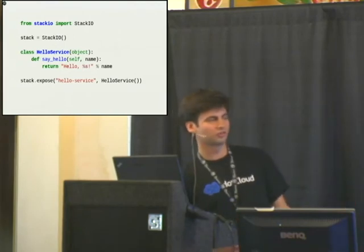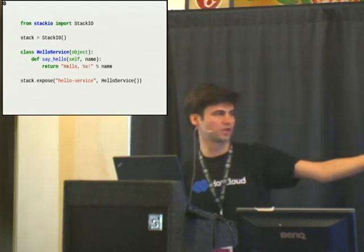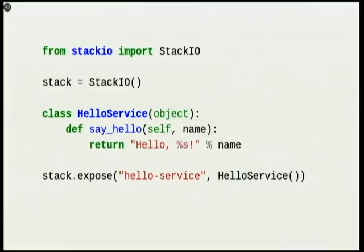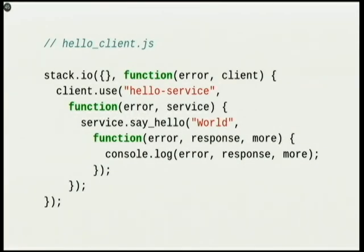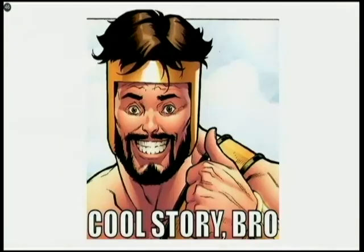Let's look at a quick example. Basically we're instantiating a stack, creating a class that is a service, and then exposing it over the network. It's fairly simple. And then we can call it almost equally simply by using the hello service we've declared and calling hello PyCon CA. We can also call this from JavaScript — it's a little bit uglier because we're using gevent on the Python side for asynchronous stuff, but JavaScript uses callbacks. We essentially do the same thing: use a hello service, say hello, and console.log the result.